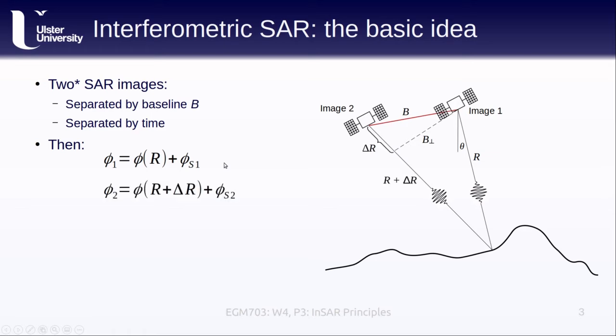In the second image, the phase of the pixel is equal to the deterministic component determined by the range of the second image which is just R plus this little ΔR which is the distance from where the perpendicular baseline intersects the sight line of the second satellite and the random component that is contributed by the subpixel scatterers. If we then construct an interferogram by effectively differencing the phases of the two images, then what we're left with is the phase owing to that extra little distance between the two satellites, ΔR.